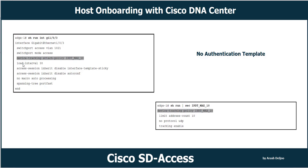Notice that no authentication commands or authentication templates are applied to the interface — only switchport access VLAN, switchport mode access, device tracking, load interval, and spanning-tree portfast. When a client connects to this port, it is placed in VLAN 1021. The no authentication template is not recommended because end clients are not validated before connecting to the network. It should only be used for troubleshooting or for clients that do not support dot1x and have a static IP configuration.